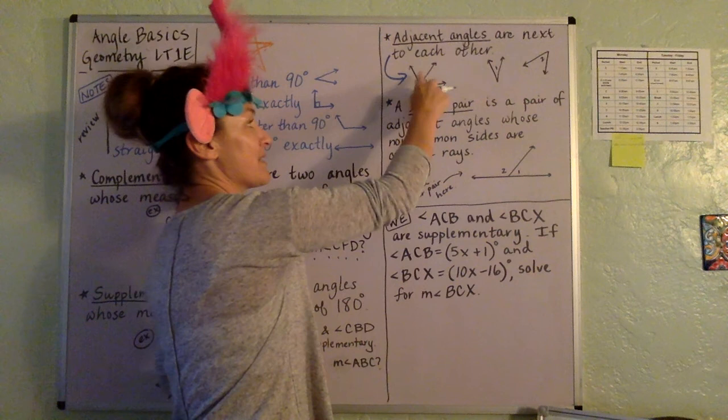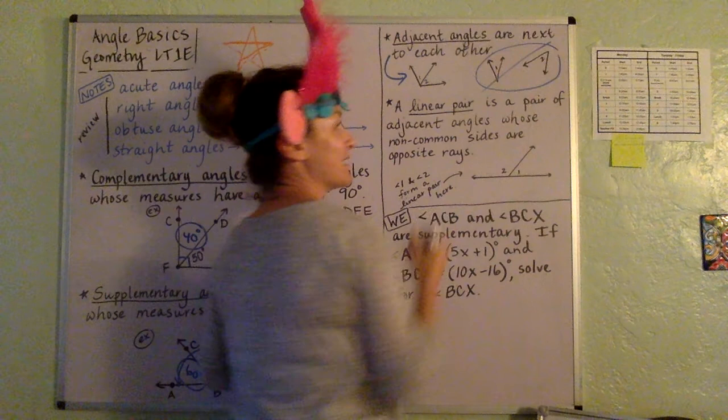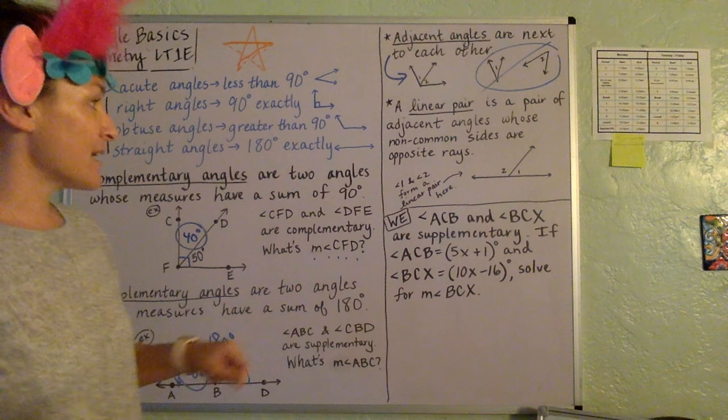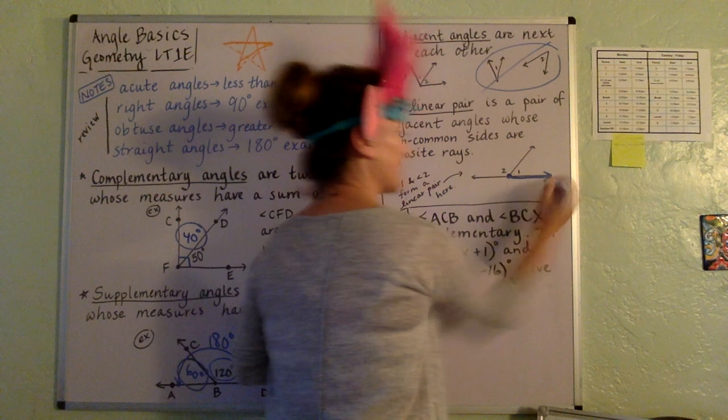Angle 1 and angle 2 over here, this would be an example of not adjacent angles. A linear pair is a pair of adjacent angles whose non-common sides are opposite rays. So look at, check out this ray, I'll highlight it here. And then check out this side, I'll highlight it here.